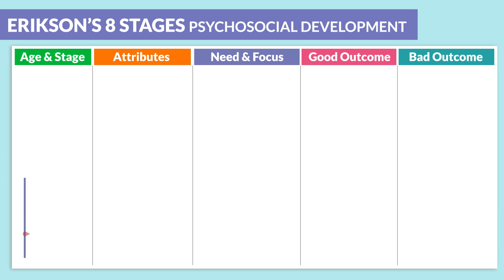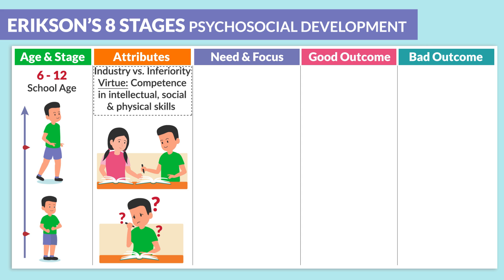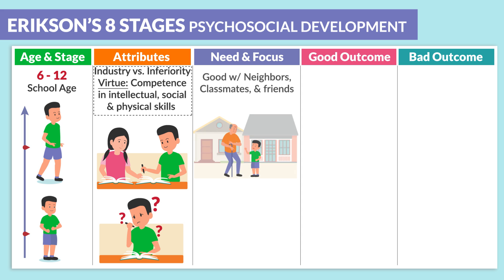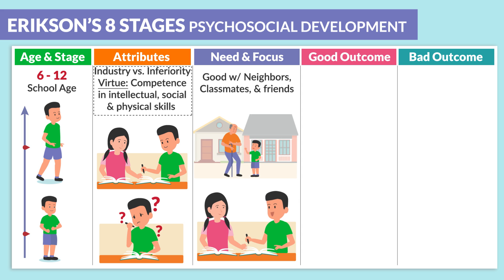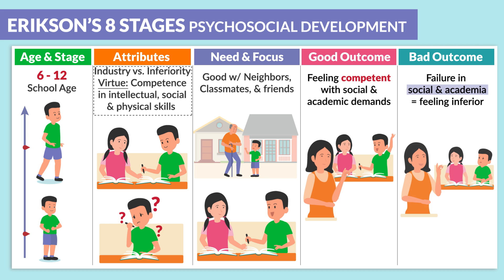The next age group is 6 to 12 years old — our school-aged children. The attributes are industry versus inferiority. The virtue is competence in intellectual, social, and physical skills. The need and focus for this age group is good relationships with neighbors, classmates, and friends. The good outcome is feeling competent with social and academic demands. The bad outcome, as mentioned by Hesse, is failure in social and academic settings, leading to a feeling of inferiority.